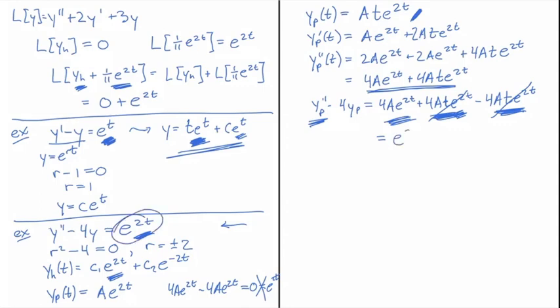And so that means I have to choose a equals 1 over 4. So my y of t for this problem is going to be c1 e to the 2t plus c2 e to the minus 2t plus 1 over 4 t e to the 2t.